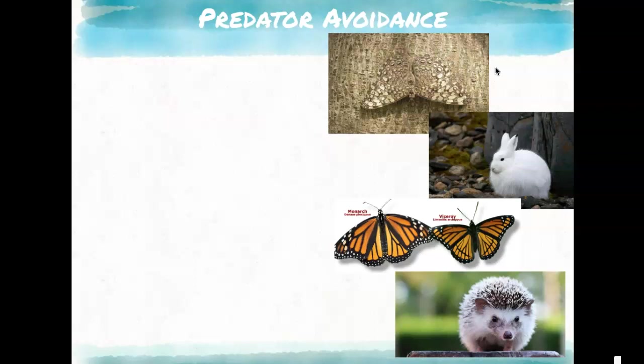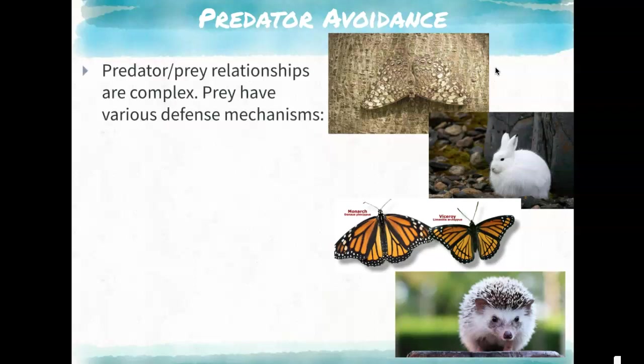Predator avoidance refers to different strategies that help an organism avoid getting eaten. It's usually the prey species that has these defense mechanisms. For example, camouflage is an adaptation that allows them to blend in with their environment — this could be their shape, coloration, or combined with a behavior.